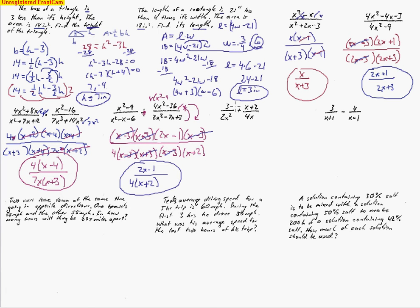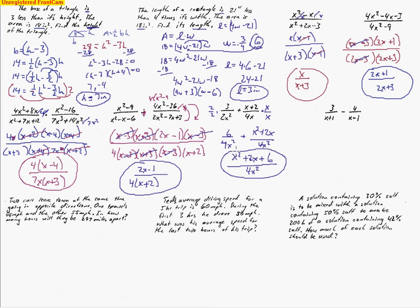The next one is adding rational expressions, so we need a common denominator. The 4x needs an extra x, and the 2x squared needs an extra 2. We get a common denominator of 4x squared, rewriting as (x squared plus 2x plus 6) over 4x squared. The numerator doesn't factor, so no canceling is possible.